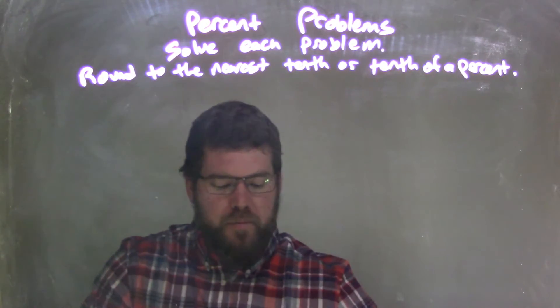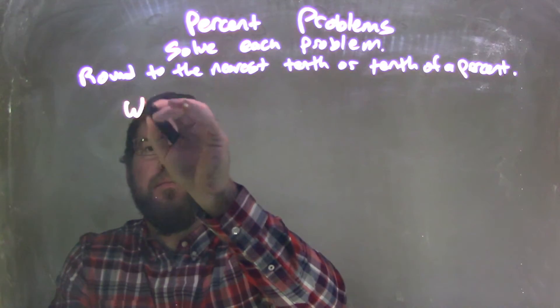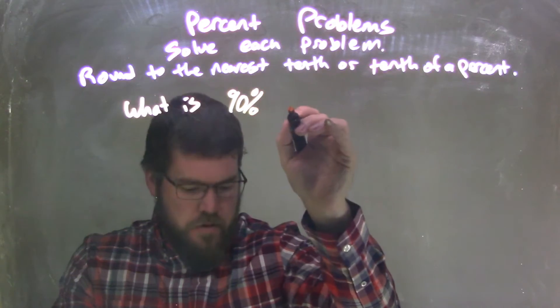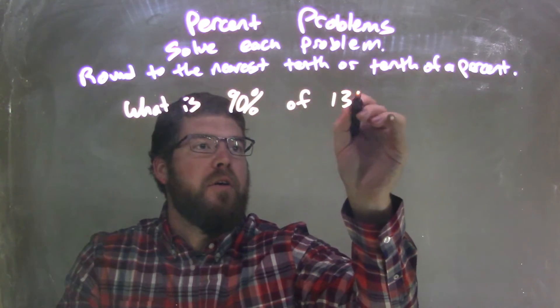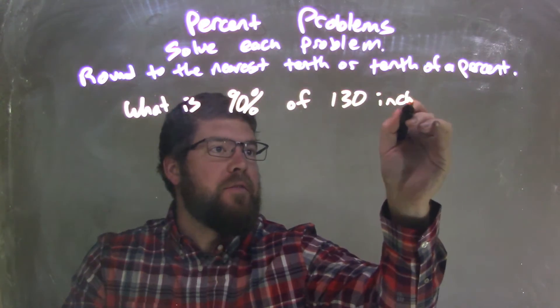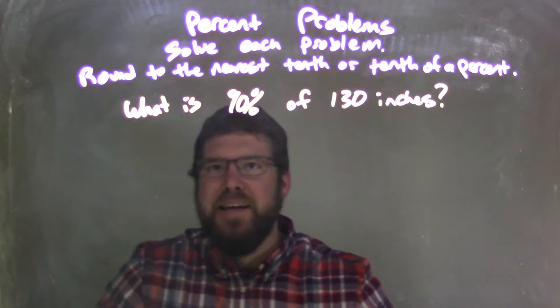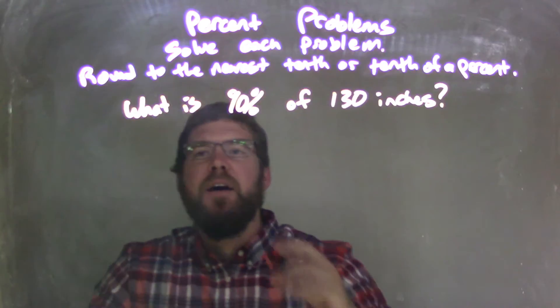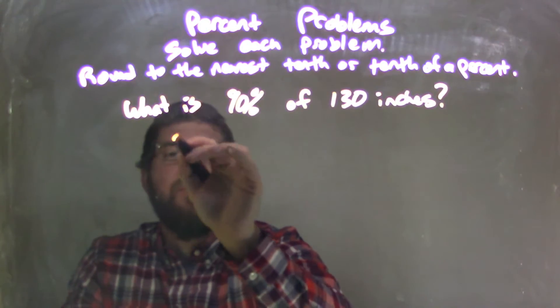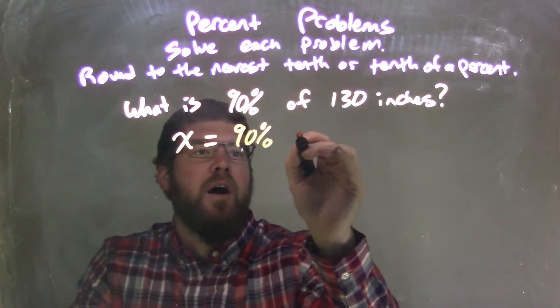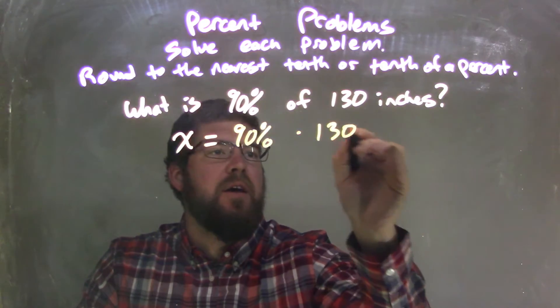If I was given this problem: what is 90% of 130 inches? Let's write this as an equation. X, or 'what', is equal to 90% of—meaning multiplication by—130 inches.